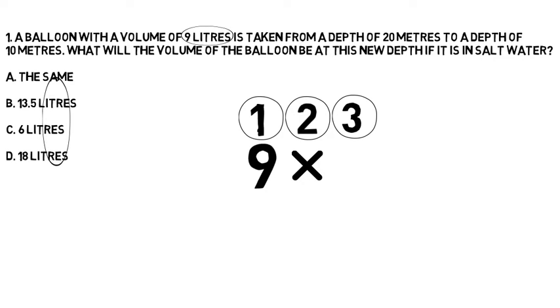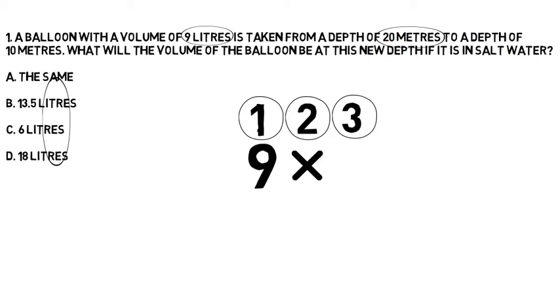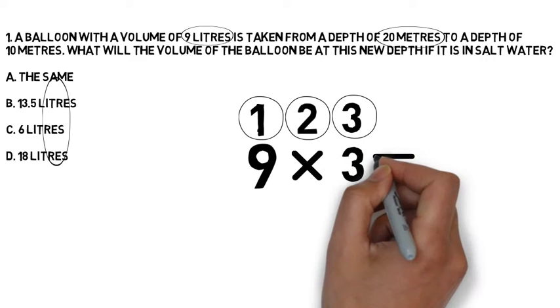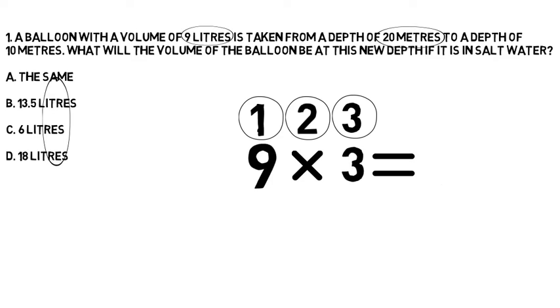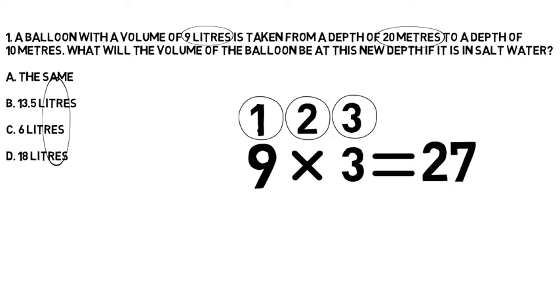Step three we need to find the first step, the starting depth. The question shows us the starting depth is 20 meters. The pressure at 20 meters is three atmospheres so three is what goes in step three and we now find that it's 27 is the answer to round one of the three step process.